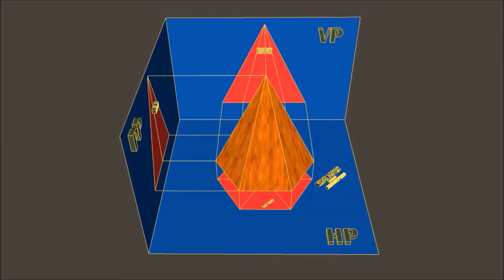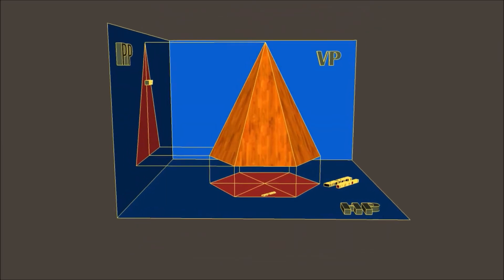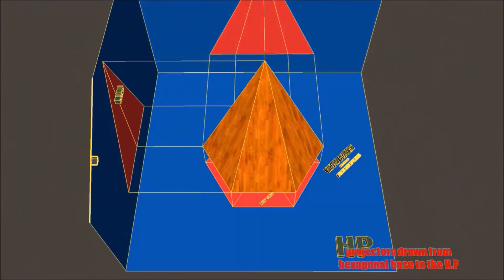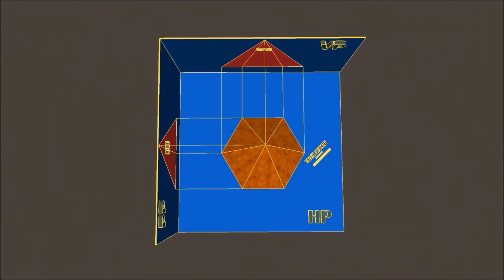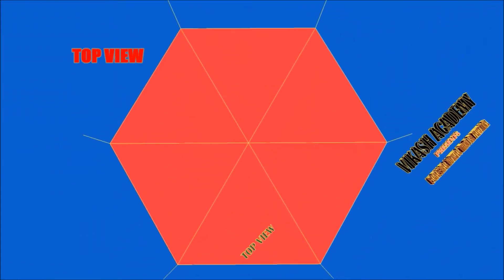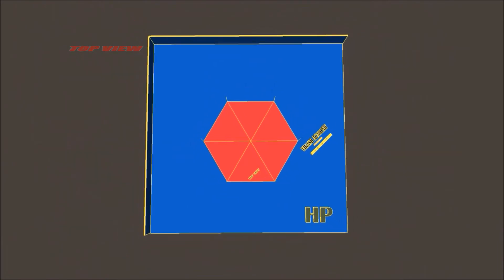We are going to obtain this hexagon due to the projected line from the hexagonal base of this pyramid. When we obtain these projections we actually obtain some points, and when we join the points we are going to obtain the hexagon on our horizontal plane.